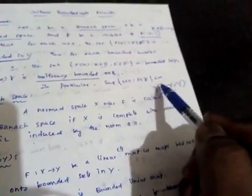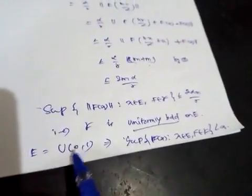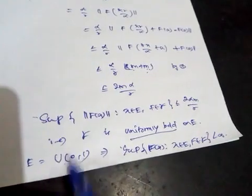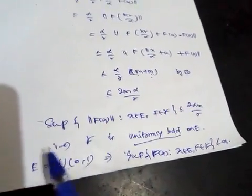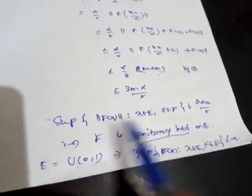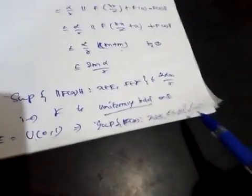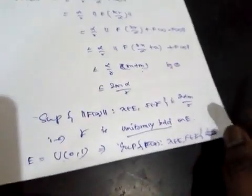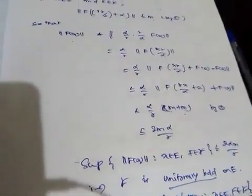In particular, the supremum of the norm of F over script F is finite, confirming the statement. The open ball around zero with radius r is contained in E, and the bound is confirmed to be less than finite. This completes the proof of the Uniform Boundedness Principle. Thank you, friends.